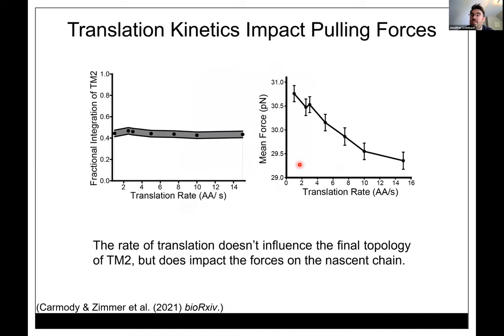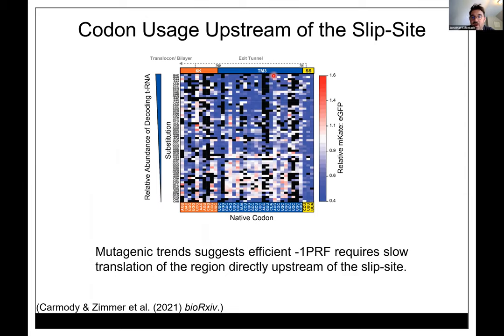We investigated whether translation rate affects folding. Coarse-grained simulations with variable translation rate showed: slowing or speeding translation doesn't affect the equilibrium propensity of TM2 to insert into the membrane, but force on the ribosome at the point of frameshifting does trend up as translation slows. Slowing translation in this region may also provide time for the stem loop to refold — ribosomes moving too fast would mow through that structure before it can reform for the next ribosome. Teasing apart these effects is challenging but clearly important.